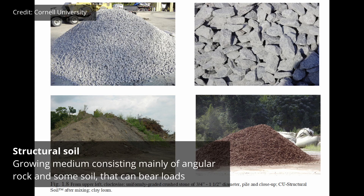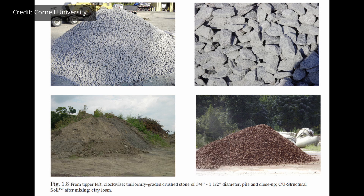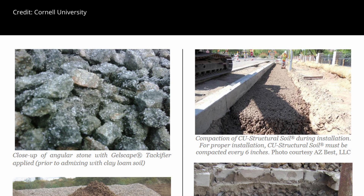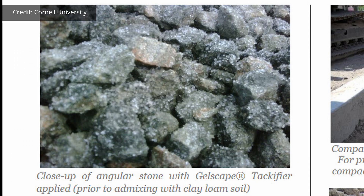Starting with structural soils, these are soils made mostly of rock with a little bit of soil and perhaps some other mix-ins to help bind the soil to the rock. The goal is to have a soil that can both bear load but also have enough space for water and air for roots. Cornell University was one of the early pioneers, developing what they called the Cornell University structural soil, or CU soil. It is made up of about 80% stone and about 20% soil, usually a clay loam. They also add hydrogel, which helps increase water-holding capacity and helps the soil stick to the surface of the rock so it doesn't settle out of the mix.